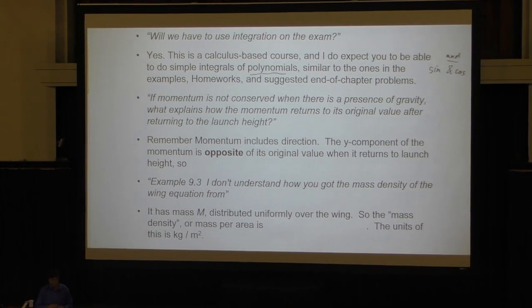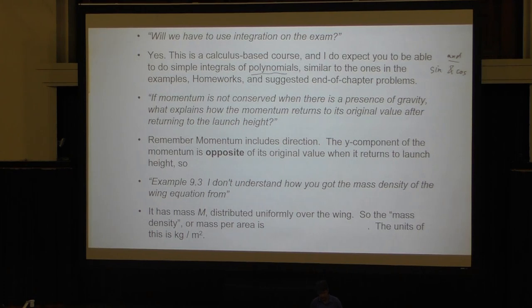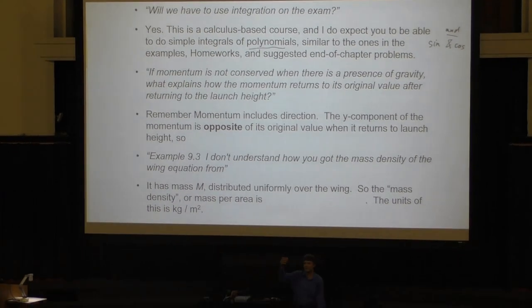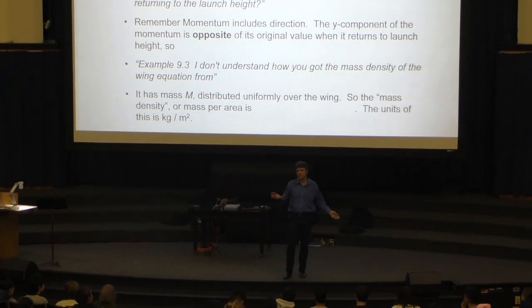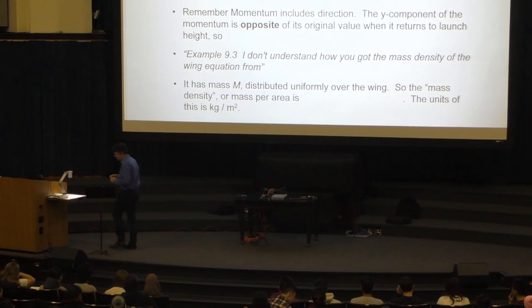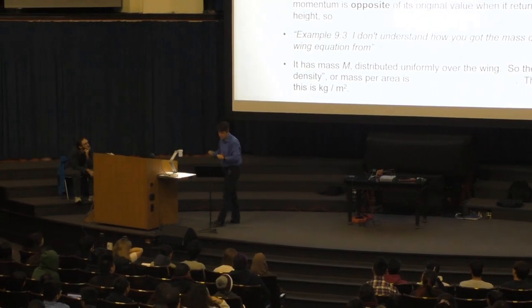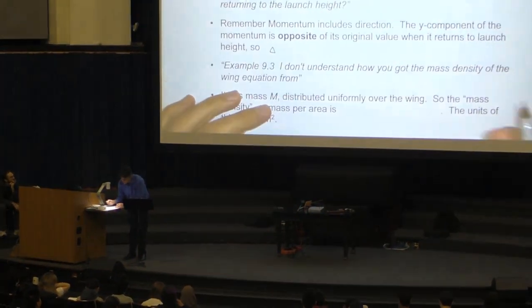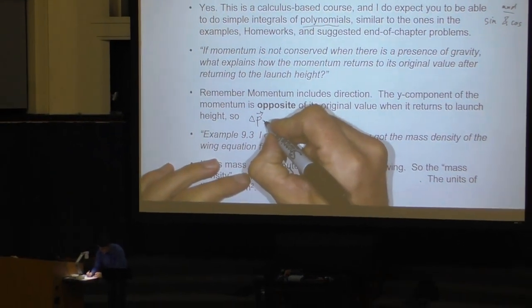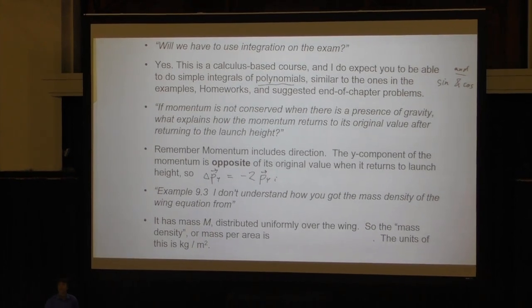A student asked: if momentum is not conserved when there is gravity present, what explains how the momentum returns to its original value after returning to the launch height? The idea is: when you throw a hockey puck up and watch it go up then fall, is momentum conserved? The system of the Earth and the hockey puck together has conserved momentum — as the puck goes up, the Earth goes down a tiny bit, but the Earth is much more massive so you don't notice it. Certainly the momentum of the hockey puck alone is not conserved. And don't forget — it goes up, it stops, and turns around, so momentum includes direction. Delta p in the y direction equals negative 2 times the initial y component of momentum.